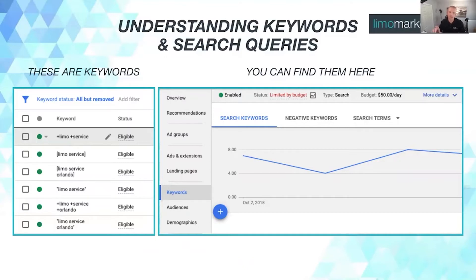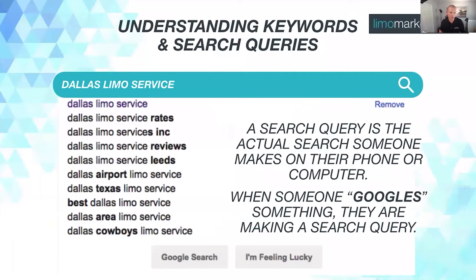If you look in your Google Ads account and you see keywords that don't have pluses, quotes, or brackets around them, I can promise you this: you're probably wasting a good deal of money on irrelevant searches.